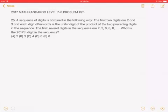A sequence of digits is obtained in the following way. The first two digits are 2 and 3, and each digit afterwards is the unit's digit of the product of the two preceding digits in the sequence. The first several digits in the sequence are 2, 3, 6, 8, 8. What is the 2017th digit in the sequence?